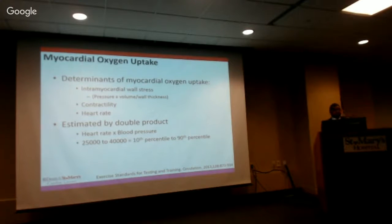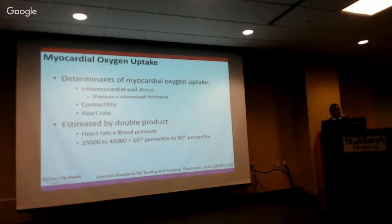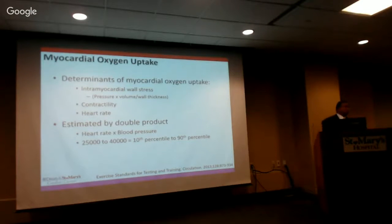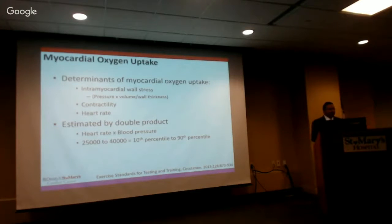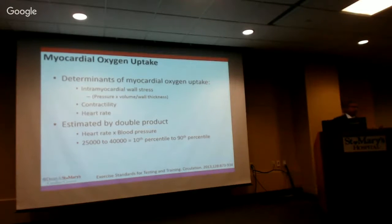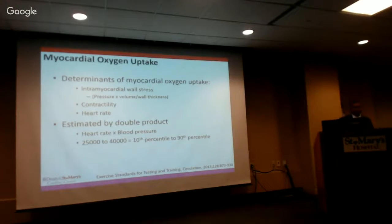Three things determine the myocardial oxygen demand: increased contractility, increased heart rate, and intramyocardial wall stress — all increase myocardial oxygen uptake. We can estimate myocardial oxygen uptake by the double product, which is heart rate times blood pressure. The 10th to 90th percentile range is 25,000 to 40,000. We don't usually report this because we have enough prognostic information from the rest of the test.